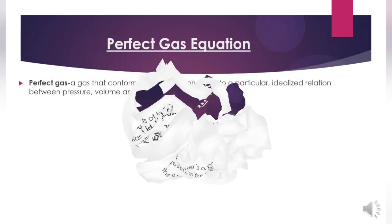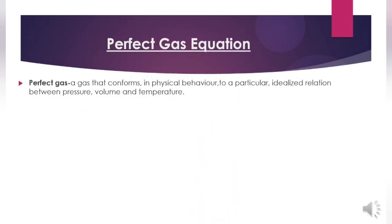The perfect gas equation: the properties that define the state of a system are not in general independent of one another. The most important example of a relation between them is provided by the idealized fluid known as a perfect gas: PV = nRT.